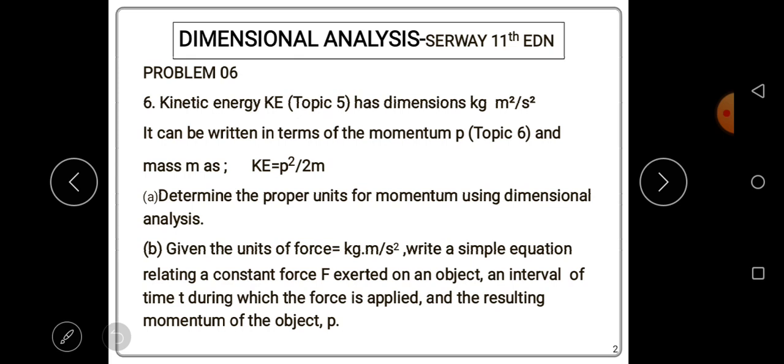It can be written in terms of momentum P. So, the symbol for momentum is P, which you learn in topic 6. And mass, M, the symbol for mass is small letter M.